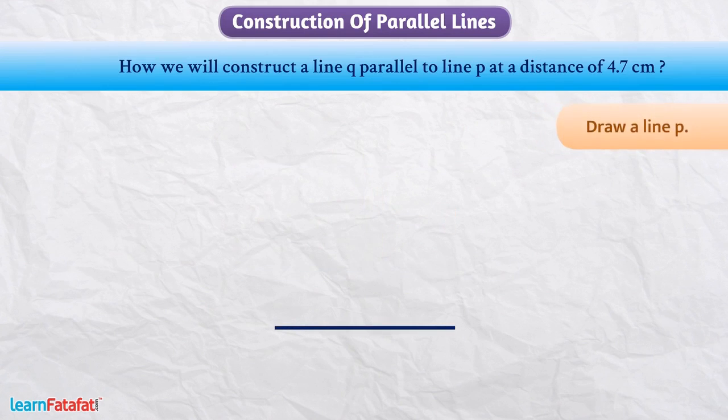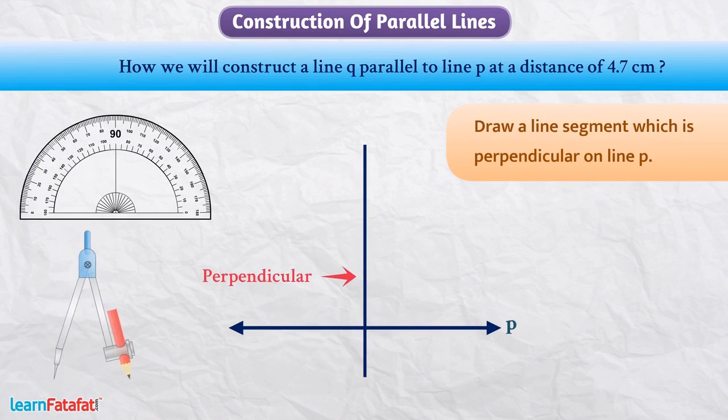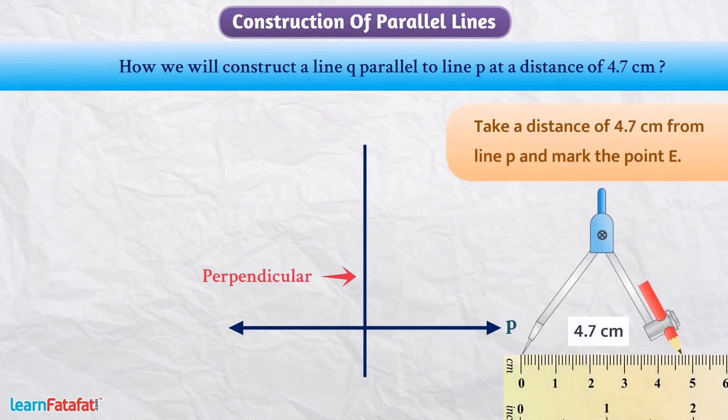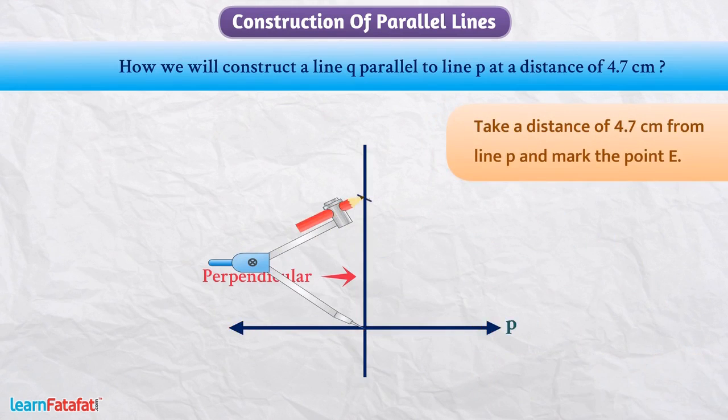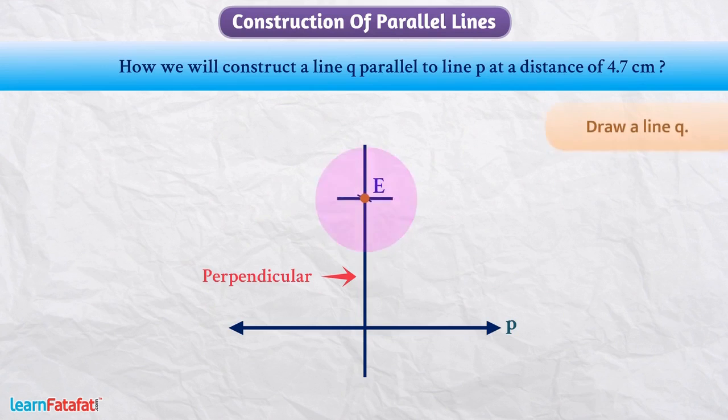Let me tell you. For this, first we draw the line P. Now, we will draw the line segment which is perpendicular on line P. We can do this with the help of protractor or compass. After this, we will take a distance of 4.7 cm from line P and mark the point E on perpendicular. Now, we can follow the above protocol and draw a line Q.